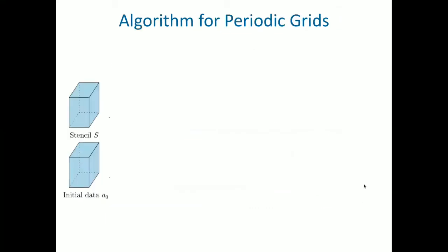Now let's look at our periodic algorithm, our algorithm for periodic grids. First off, the input it takes is initial grid data, a_0, and a stencil s. And it can be shown that if this stencil is linear, then really the stencil s is equivalent to a matrix. So think of this initial data as a vector and this stencil as a matrix, s.